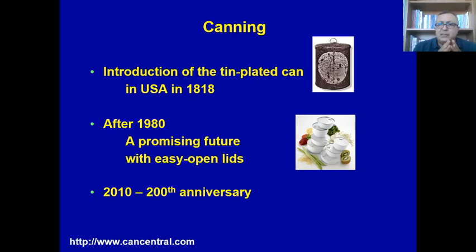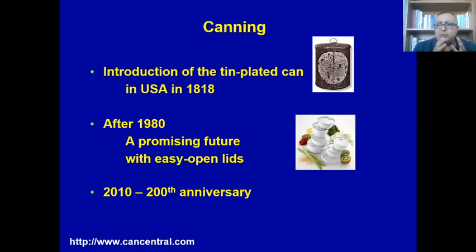Until 1980 there was not much significant change in the canning process, except that different retorts were used — horizontal and over-pressure orientation retorts — for liquid or particulate foods. In the last two decades, shaking or agitating retorts were introduced as significant alternatives. In the 1980s, these were a promising development, and 2010 marked the 200th anniversary of canning.